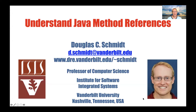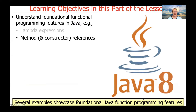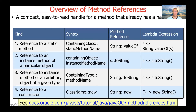We're now going to turn our attention to Java method references. I'll explain what a method reference is, and I'll also talk about a related concept called a constructor reference, which is just a method reference for constructors. We'll look at a whole pile of examples to try to make everything as crystal clear and concrete as we can. A method reference is a very compact, easy-to-read handle for a method that already has a name.